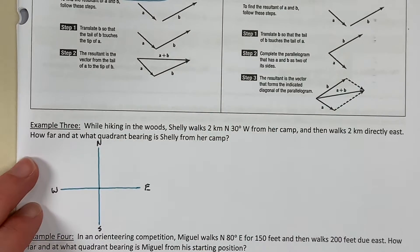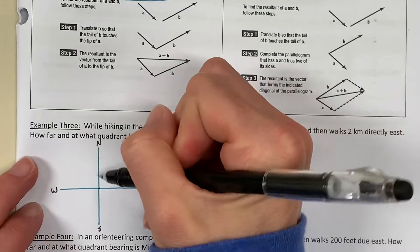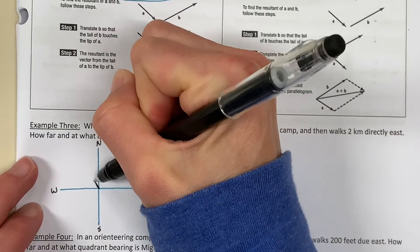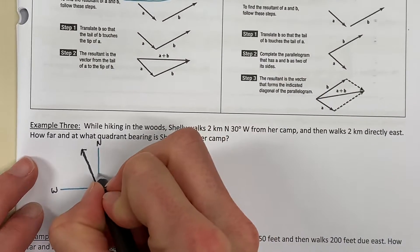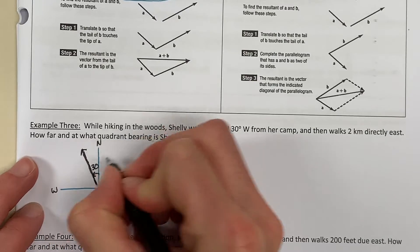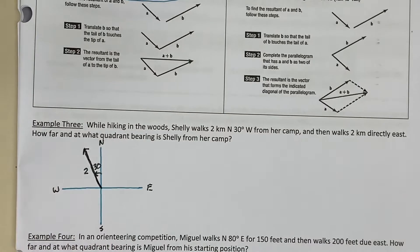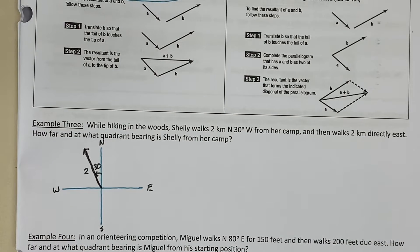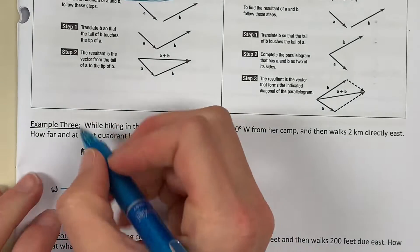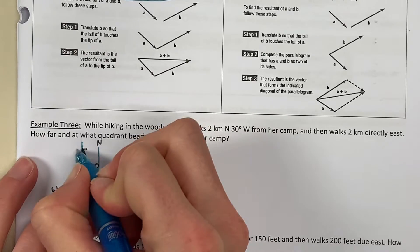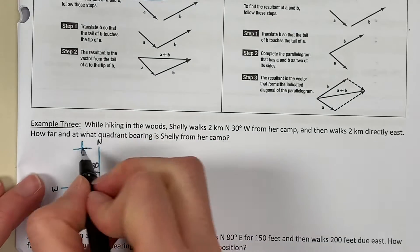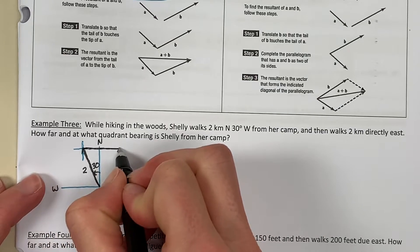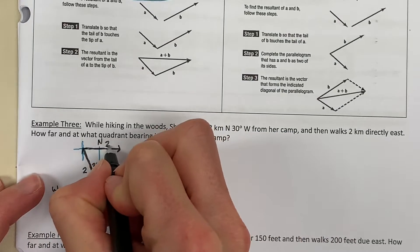Now, if she's going north 30 degrees west, we're moving up and to the left. So this is 30 degrees. And she went two kilometers. She then walks two kilometers directly east. Just envision that we create a new coordinate plane right here. And if she's going to go two kilometers directly east, that's going to go to her right. Again, she's given another two kilometers.